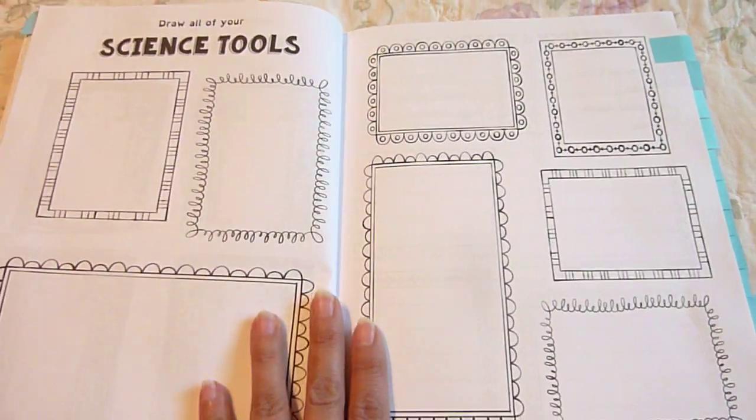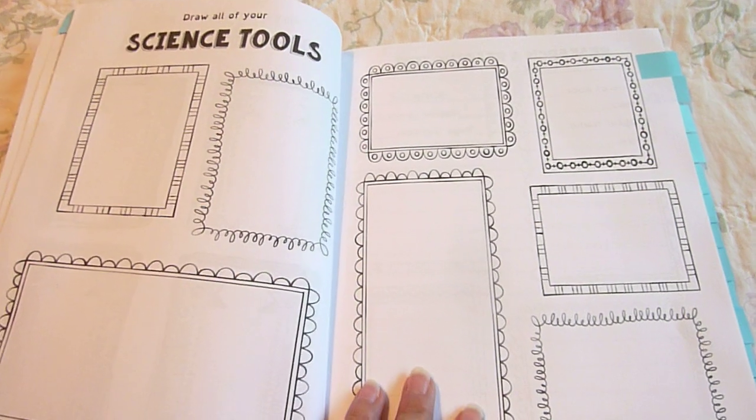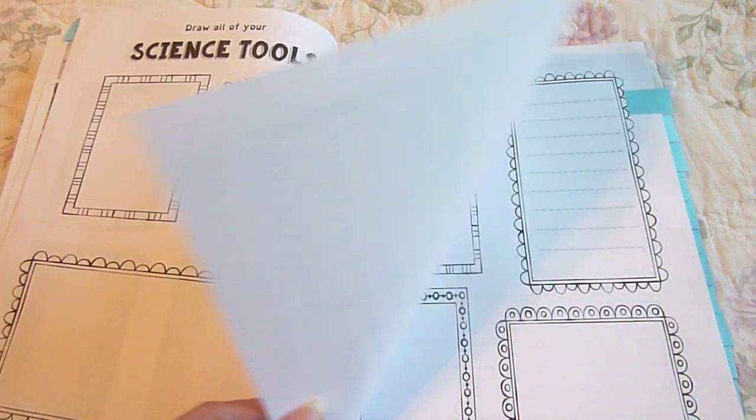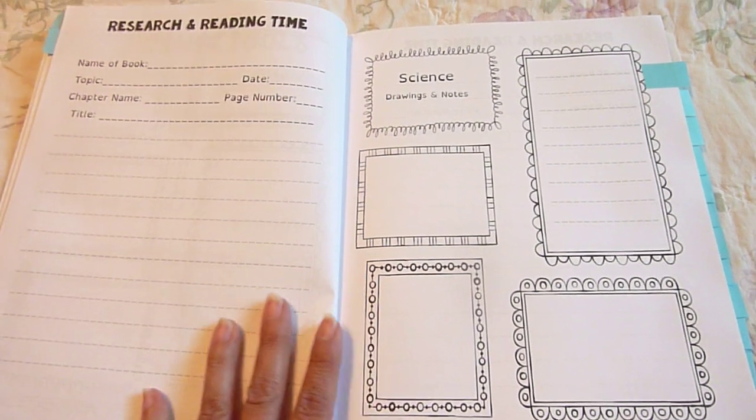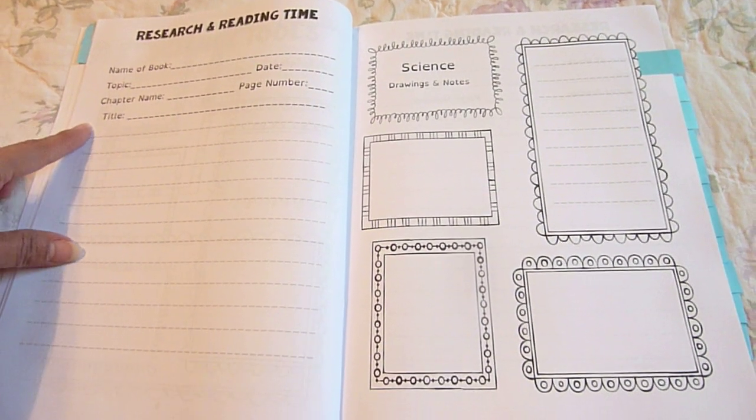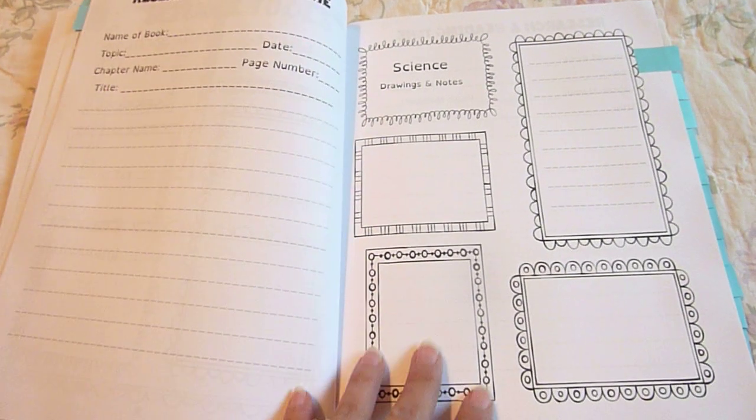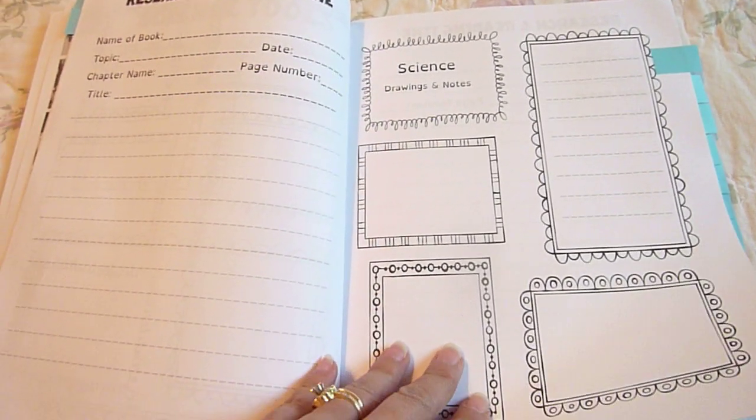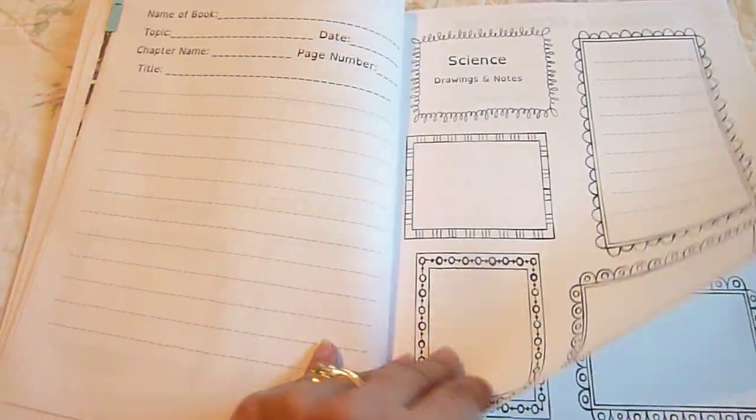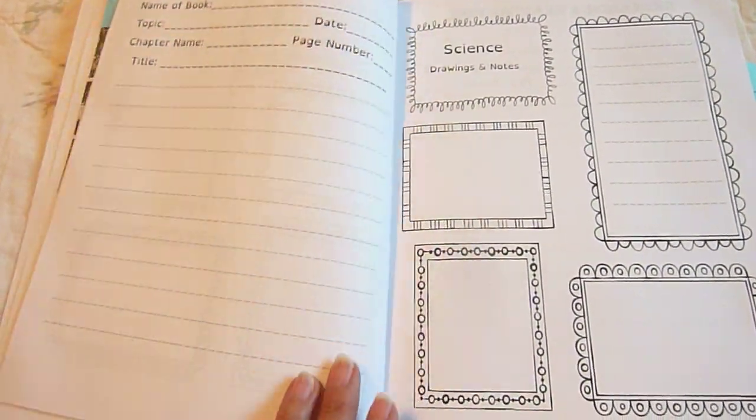The next chapter is Science Tools. Draw all your tools. And then the next one is Research and Reading Time. Here they would write the name of the book, topic, date, chapter name, page, title, science, drawing, and notes, so they can illustrate that. And these pages right here repeat themselves.